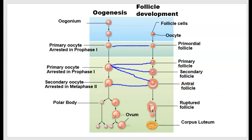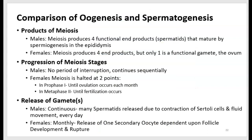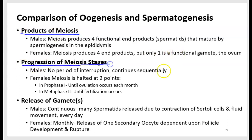Let's compare oogenesis with spermatogenesis. The two differ in terms of what products are produced by meiosis, how meiosis stages progress, and how gametes are released. In males, all products of meiosis are functional — you get four functional spermatids that undergo spermiogenesis in the epididymis, forming a flagellum and completing maturation. In females, meiosis produces four end products but only one is a functional gamete — the ovum — and the other three are polar bodies.